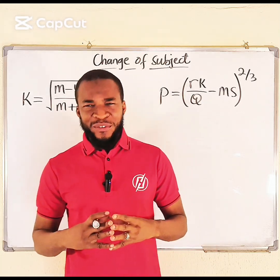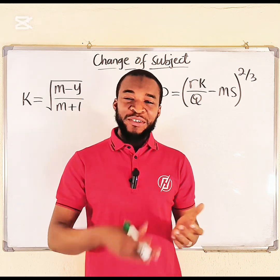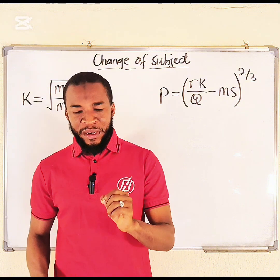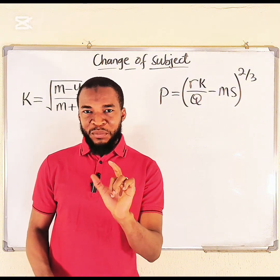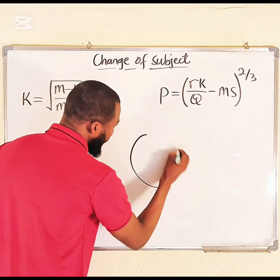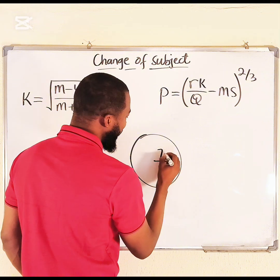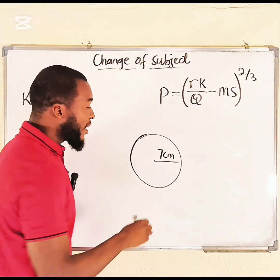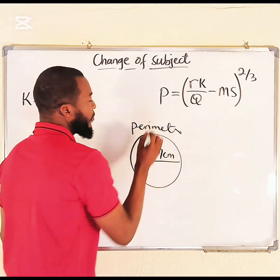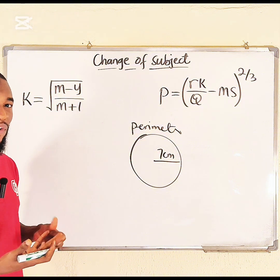The title of this tutorial is 'Understanding Subject Formula as well as Change of Subject Formula.' We have two problems here, but before then let us first understand what it means by a subject. Let's assume we have a circle with a radius of maybe 7 cm and your teacher asks you to find the perimeter of this circle.